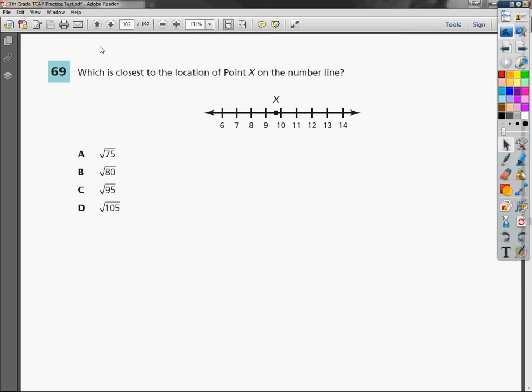One of the ways you could do this is convert all the answers to decimals. So if I did the square root of 75, I would end up with 8.6 or 8.7-ish.